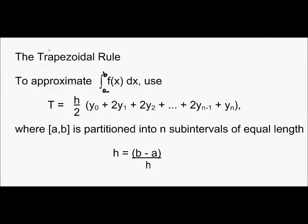The trapezoidal rule. We've looked before at different Riemann sums, which were a way to approximate the value of an integral. Well, another way to approximate the value of an integral is with the trapezoidal rule. To approximate this integral, you can use the following formula.